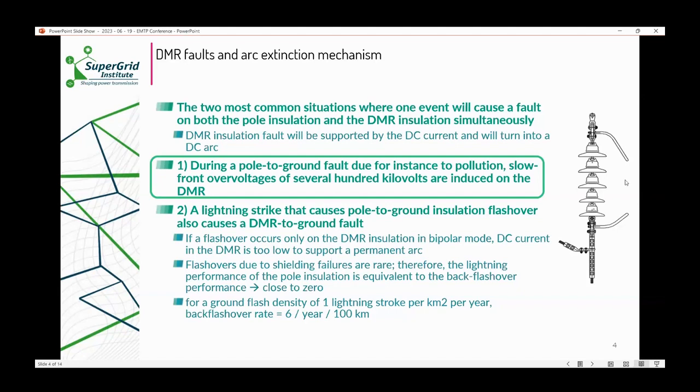What faults can cause voltage or outage of both pole insulation and DMR insulation simultaneously? If this happens, the DMR insulation fault will be supported by the DC current and will turn into a DC arc, which we don't want. Two of these events: one is during pole to ground fault due to pollution on a positive pole, for example. Slow front overvoltages of several hundred kilovolts are induced on the DMR. If it's insulated for medium voltage, we're going to have a flashover either on the surface of the insulators or between the two arcing horns. You can see a typical DMR insulator on the right hand side. Second event: lightning strikes that cause a pole to ground insulation flashover and also cause a DMR to ground fault. If a flashover occurs only in the DMR insulation in bipolar mode, DC current in DMR is too low to support the permanent arc, so it will extinguish itself. The lightning performance of the pole insulation is equivalent to back flashover performance. We calculated in this paper for poles it's close to zero. For an example of a ground flash density of one lightning stroke per kilometer square per year, back flashover rate of DMR is six per year per 100 kilometers. In this paper, we decided to concentrate on the slow front overvoltages due to pole to ground faults on positive or negative pole.